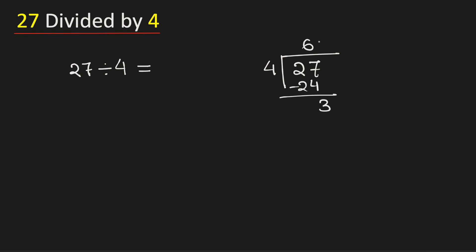Now 3 is less than 4. That is why we will put a decimal here so that we can put one 0 here.